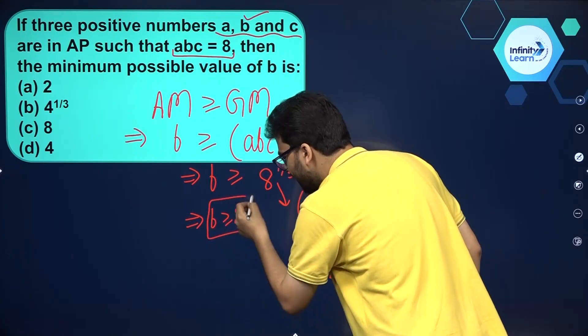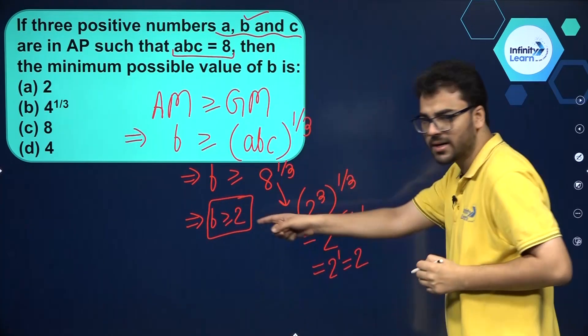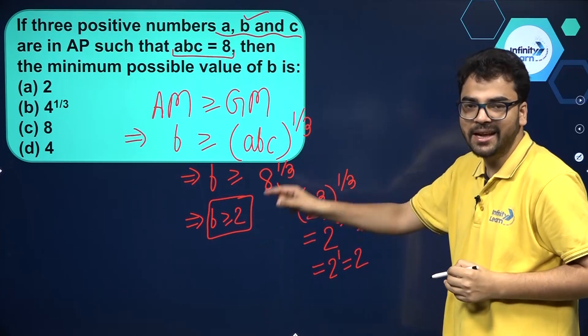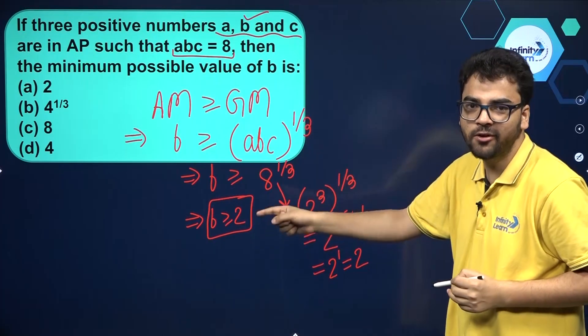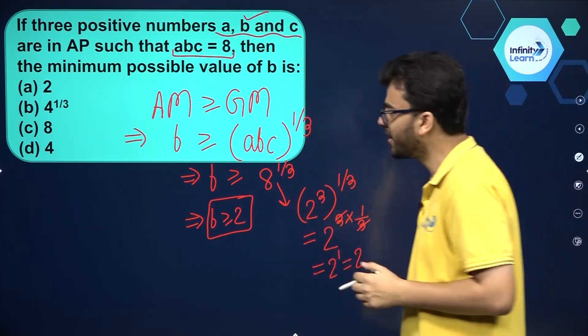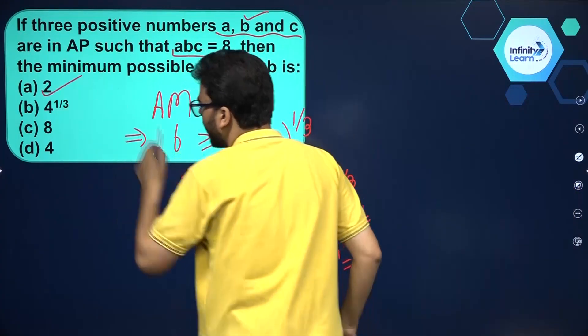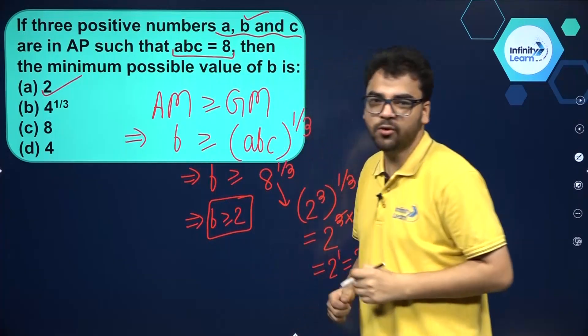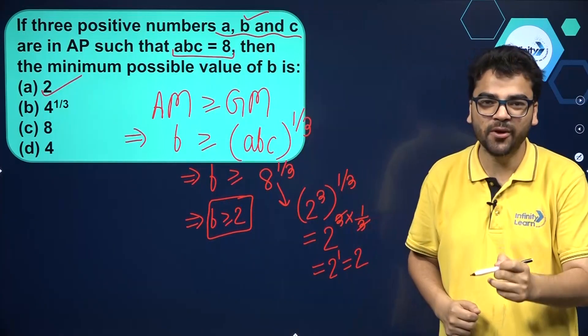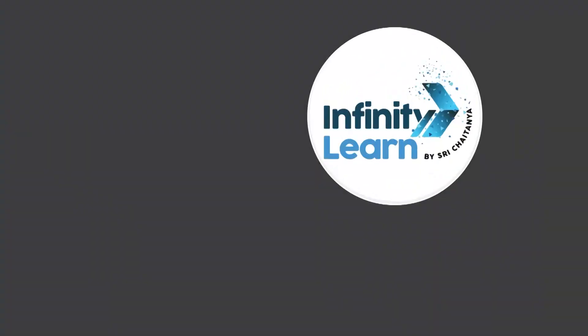If B is greater than or equal to 2, that means the minimum value of B is 2. I hope this question is clear to every student watching this.